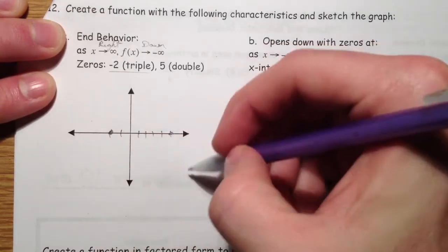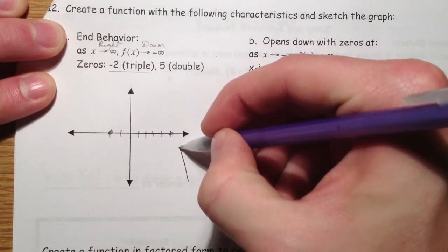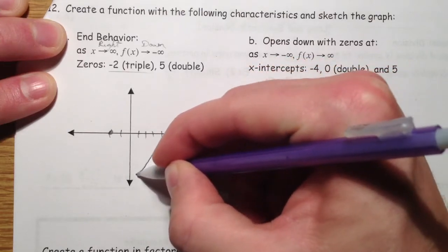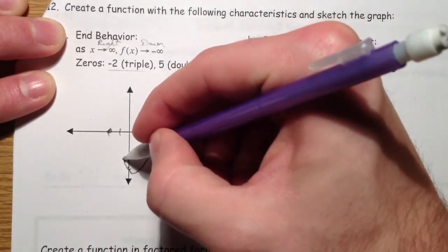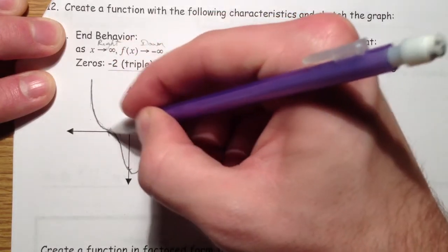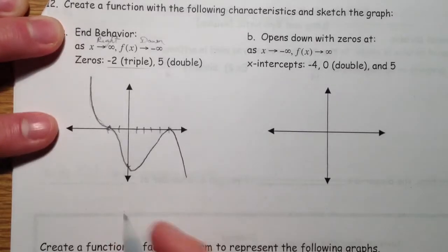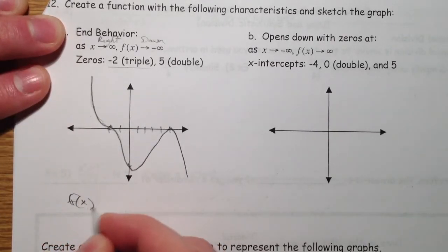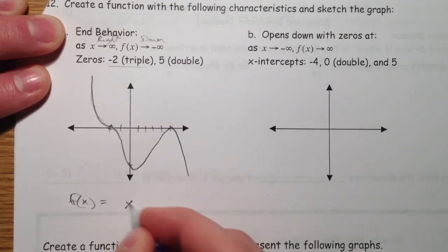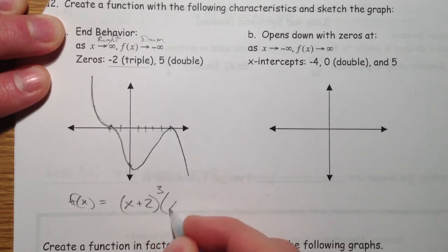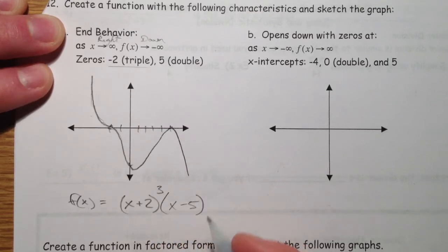So double root of 5. So it's going to bounce at 5. And then at negative 2, it's going to be a triple root. So if we want to write a function, f(x), it's got to be x plus 2 being cubed and x minus 5 being squared.